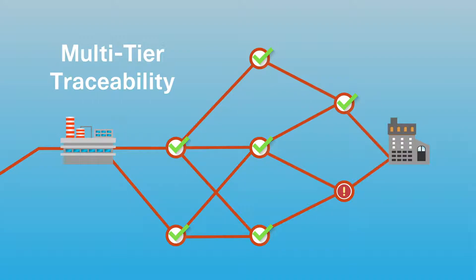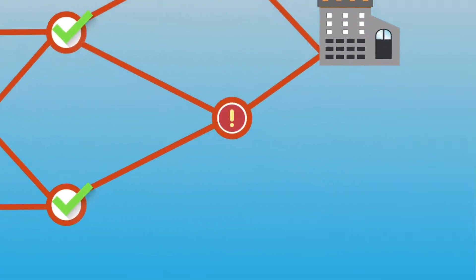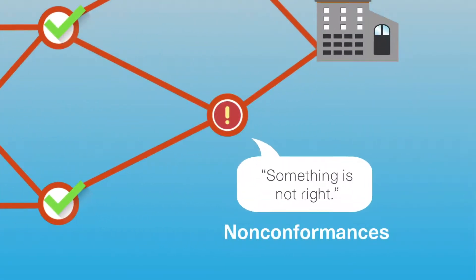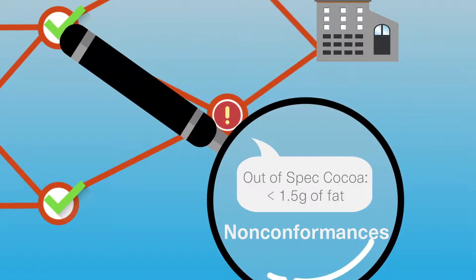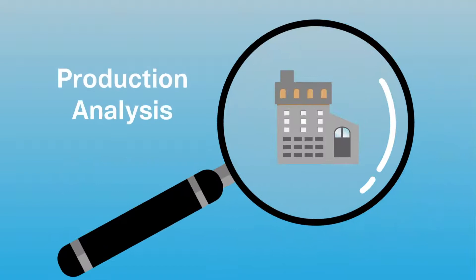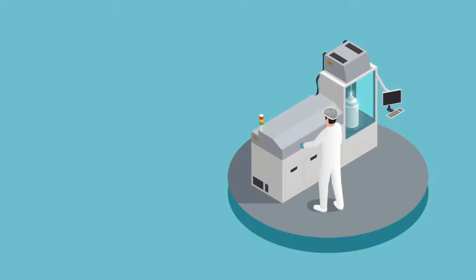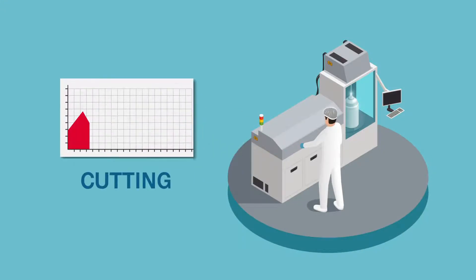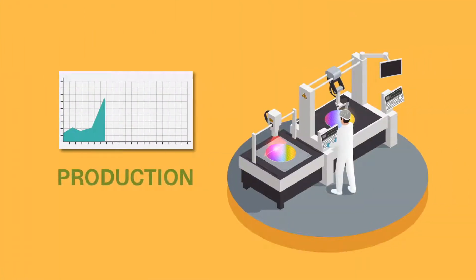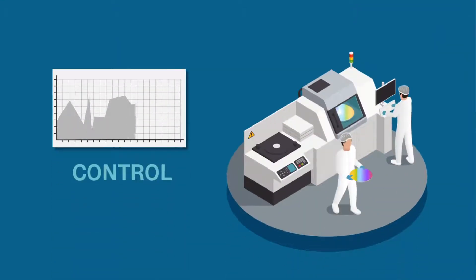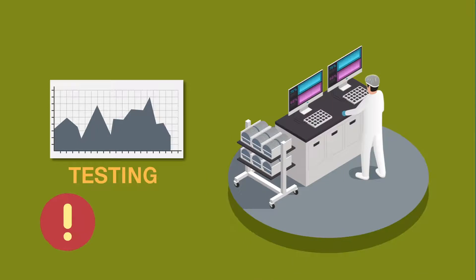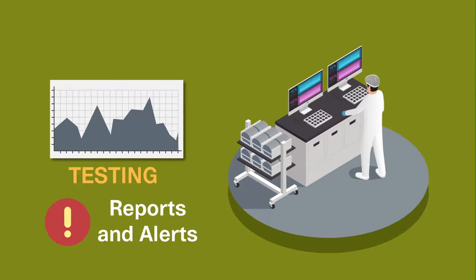We're capturing quality data as well as where material was used. We include non-conformance management for suppliers, as well as production analysis — expanding statistical analysis into looking at what's happening within the four walls. If you capture data electronically, you need to get value out of it, so the system has a full suite of reports and alerts.